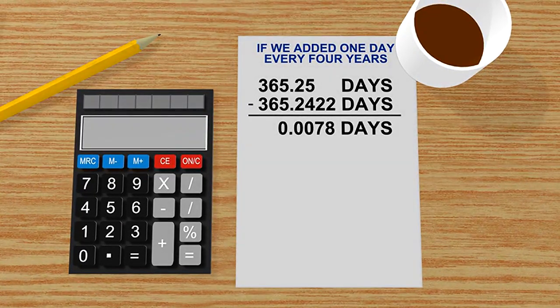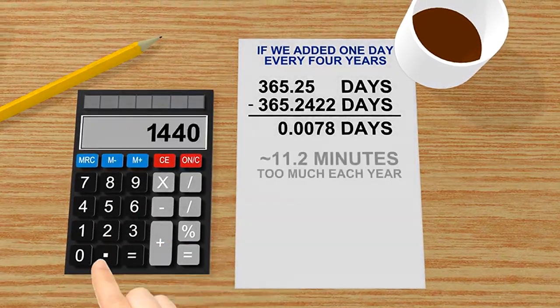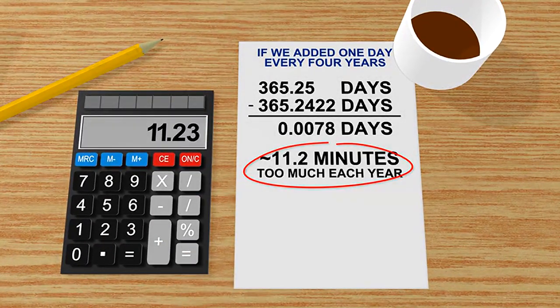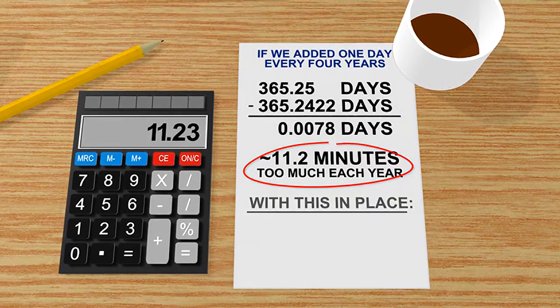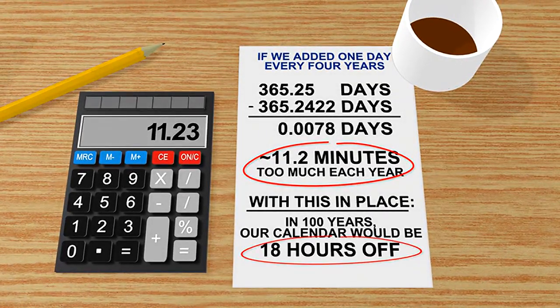Do a little math here again: 365.25 minus 365.2422. That puts us actually over by about 11 minutes every year. Over 100 years, now we're off just 18 hours — a huge improvement from 24 days.